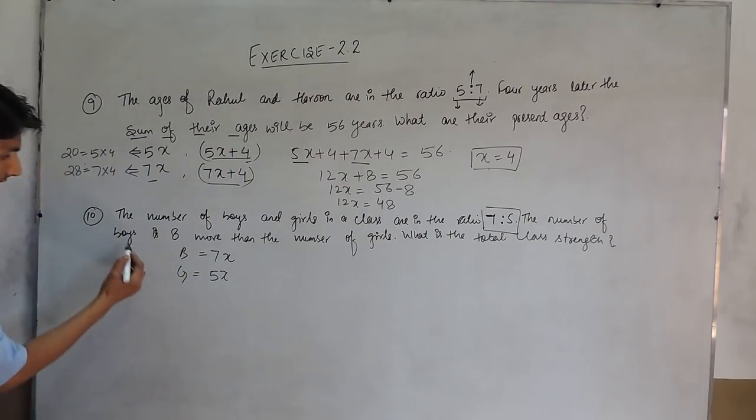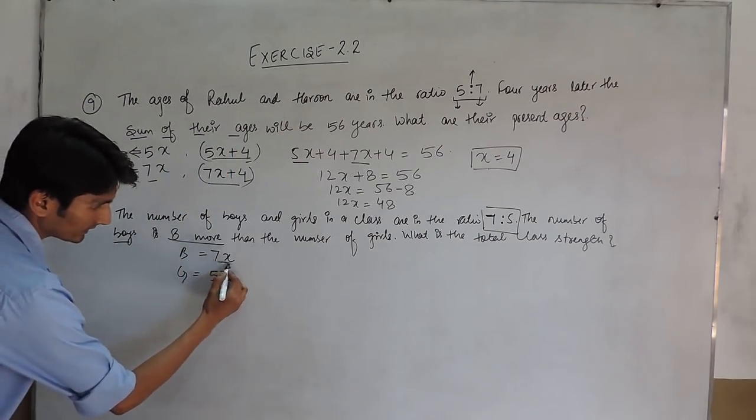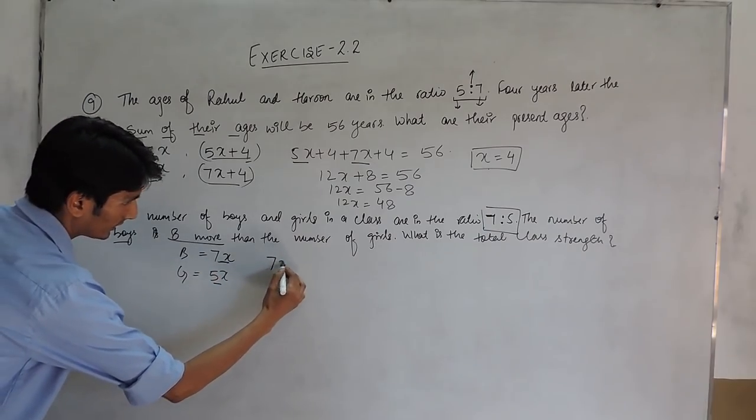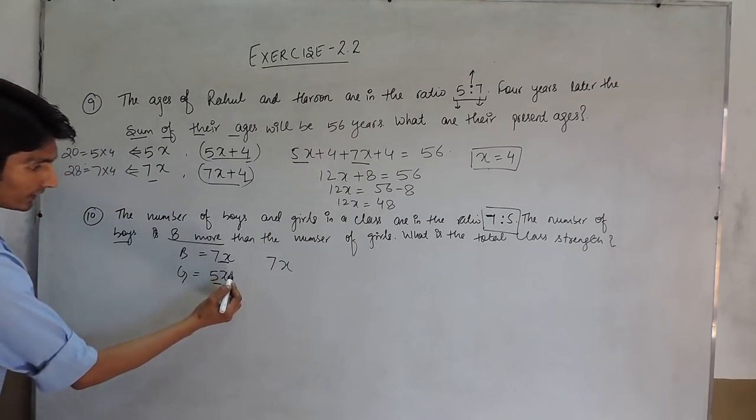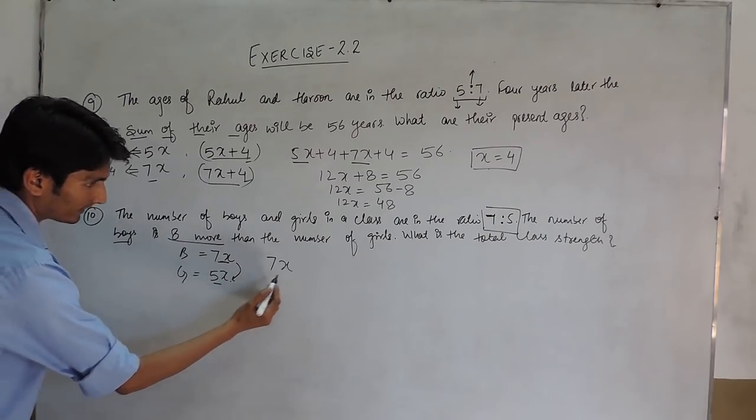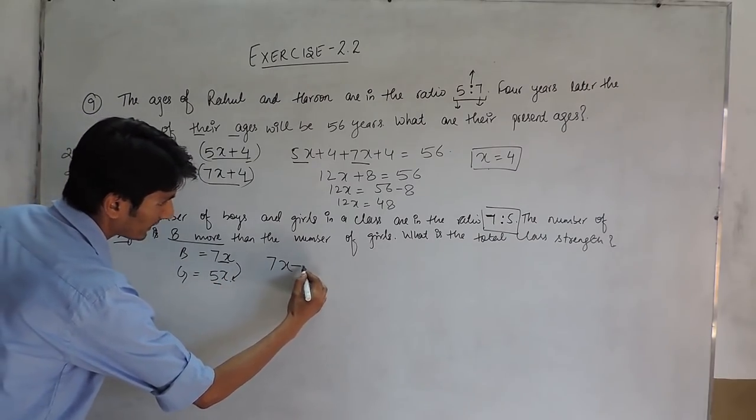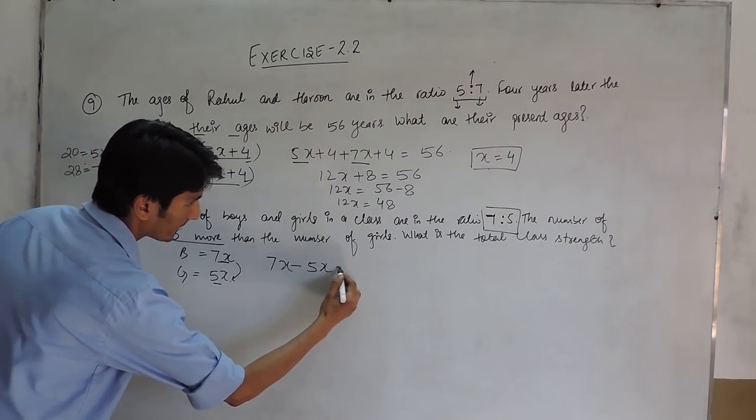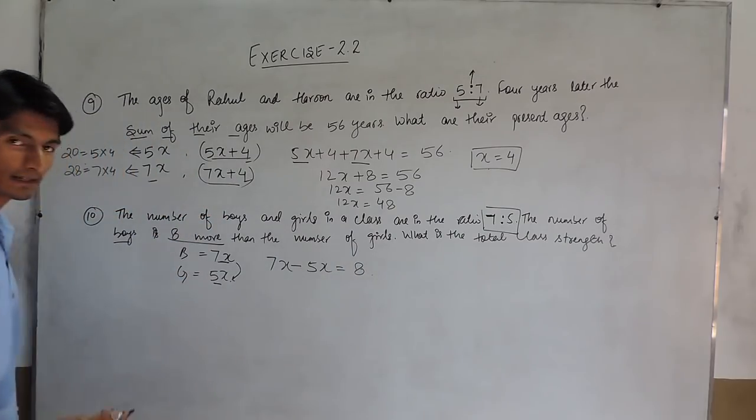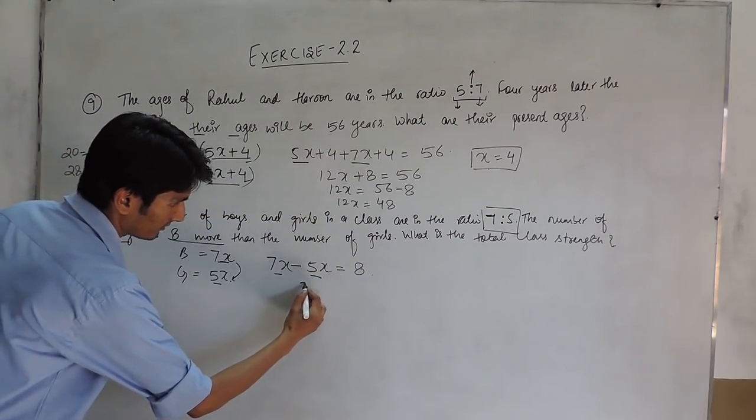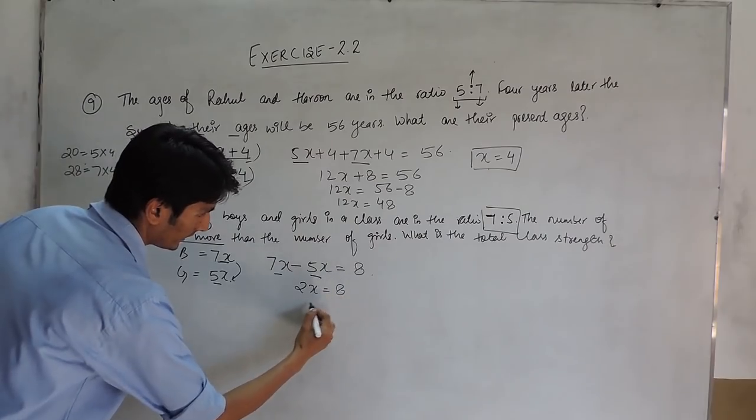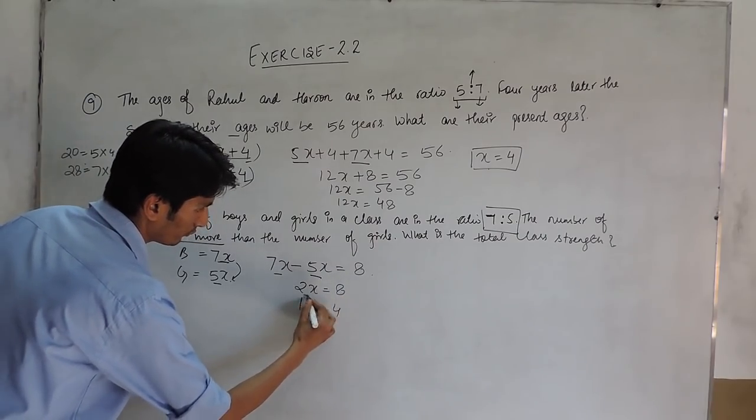And further it is given that the number of boys is 8 more than the number of girls, which means there are 8 more boys. When the number of girls is subtracted from the number of boys, 8 remains. So, this will equal to 2x, which equals 8, and x would be equal to 4.